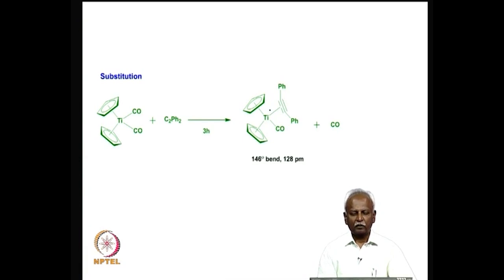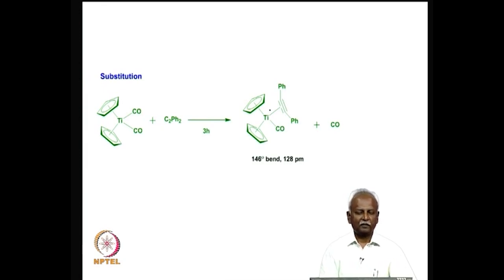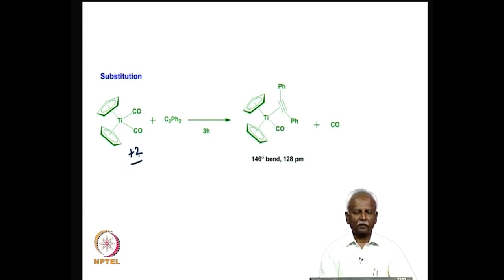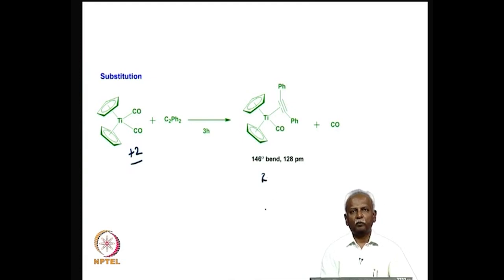This synergistic interaction leads to a strong bond between the metal and carbon monoxide, which enhances the stability of the whole system. It is possible to form a complex in which diphenylacetylene is complexed to titanium. The titanium is in the plus 2 oxidation state, because the cyclopentadienyl anion withdraws electron density and preferentially forms a plus 2 complex. In this plus 2 complex you have 2 electrons on the titanium which are capable of back bonding with the carbon monoxide and with the acetylene.